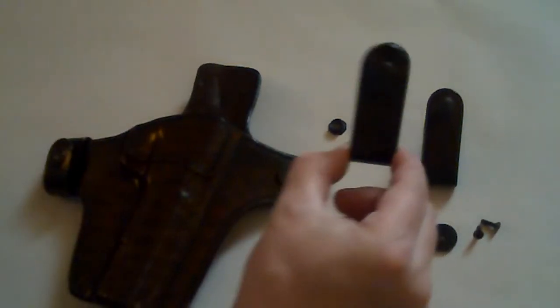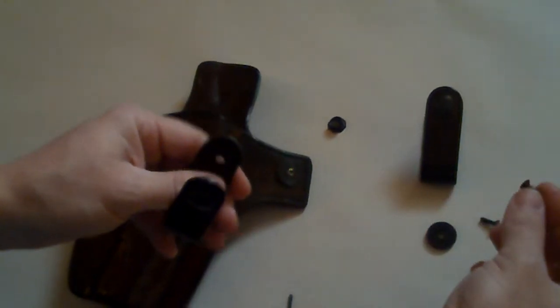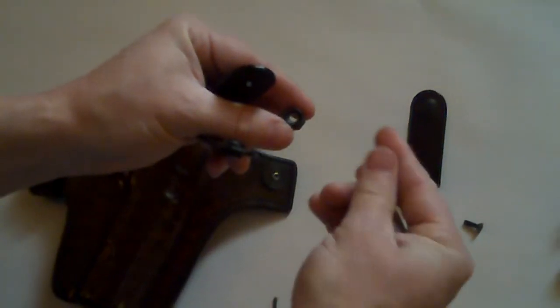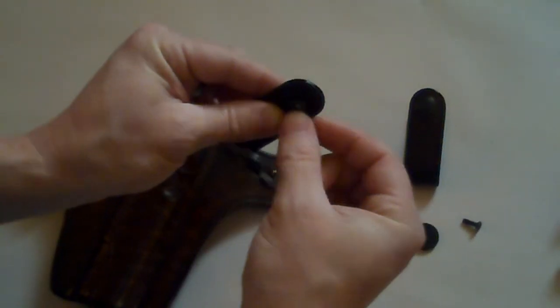Now we'll take one of the inside the waist straps, one of the longer screws that was supplied, and the male stud. Take the screw through the male stud, and take that through the strap.